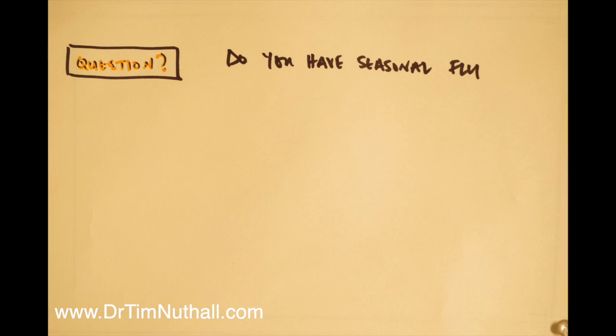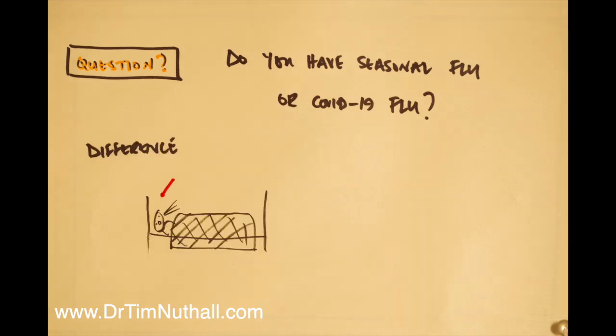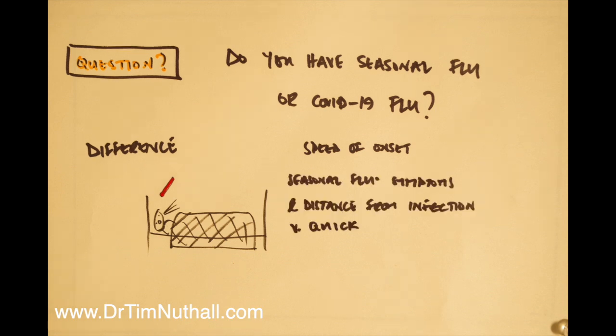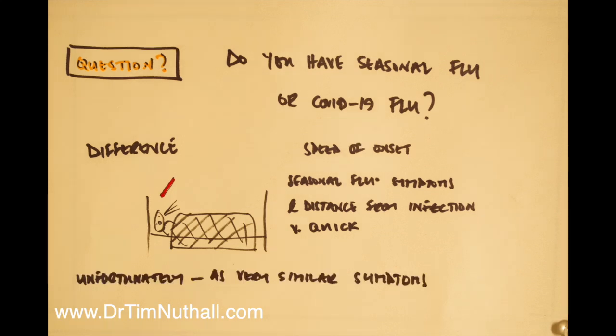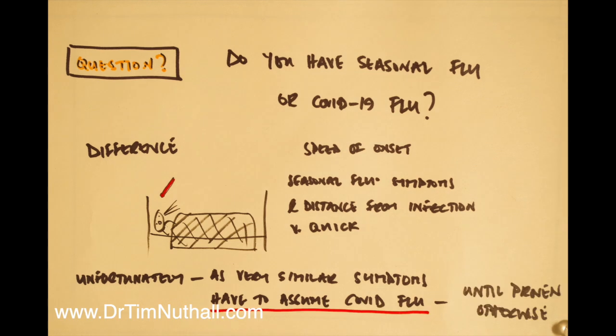With seasonal flu, which is the normal flu, which is still around at this time, the main difference is speed of onset. You're likely to come down more quickly with more symptoms straight away having met someone with the flu. Very difficult to distinguish and you have to assume that until proven otherwise you do have the Covid flu.